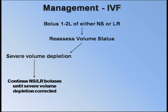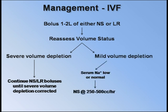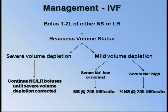Once the patient is in the realm of mild volume depletion, look at the serum sodium. If it is low or normal, switch to a continuous infusion of normal saline at a rate of 250 to 500 cc per hour. If the serum sodium is high, use half normal saline at 250 to 500 cc per hour. In patients with a history of heart failure or in those presenting with any degree of hypoxia, you may want to consider lower infusion rates.